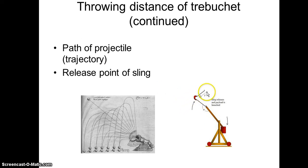But it's also going to involve the release point of the sling. So where is the projectile released? Is it released as it's going up, or is it released as it's going forward, or you could release it as it's going down? That's not going to give it a very good trajectory.